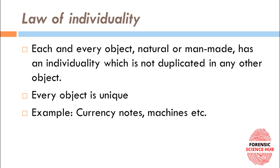Then comes the Law of Individuality. This means that each and every object, whether natural or man-made, has its own individuality which is not duplicated in any other object. In short, every object is unique and has individual characteristics unique to that particular object. For example, currency notes — all 500 rupee notes look mostly the same, but they are not the same; they each have a different serial number. So every object has its own individuality.